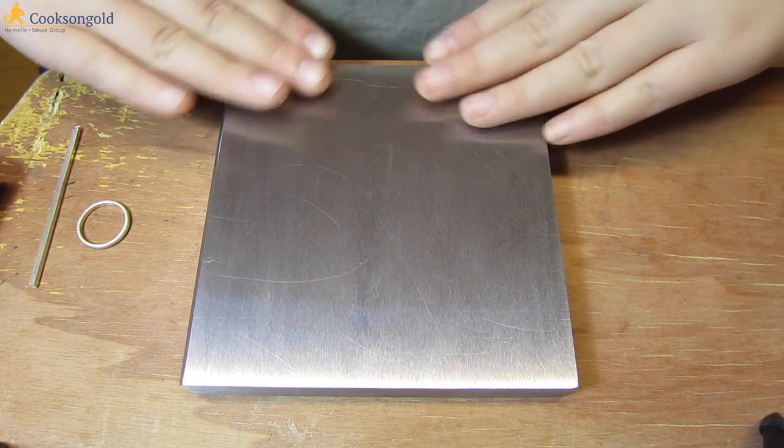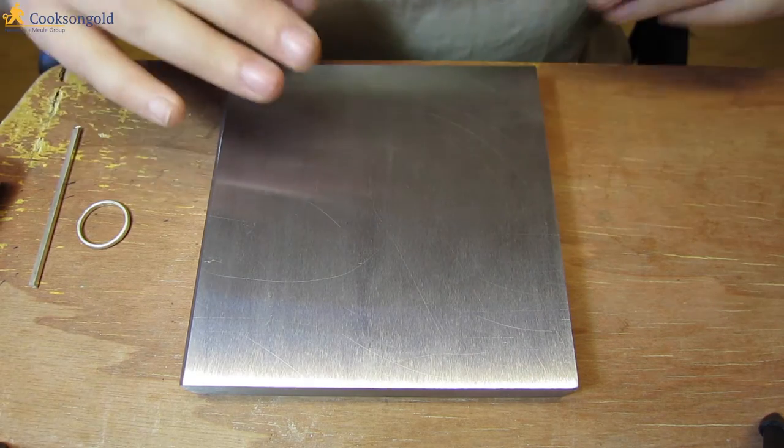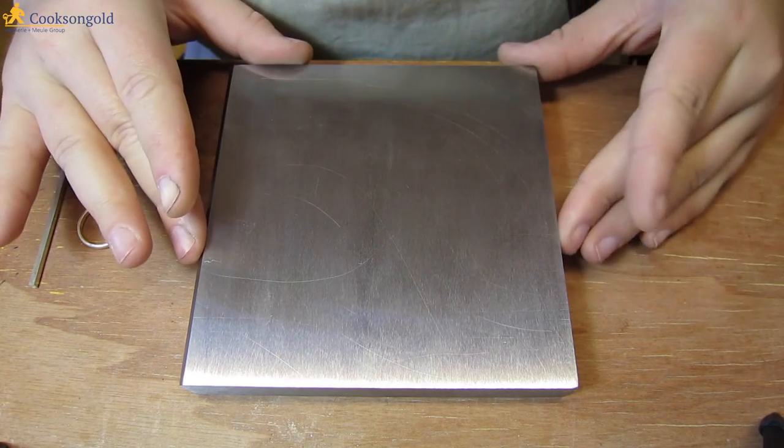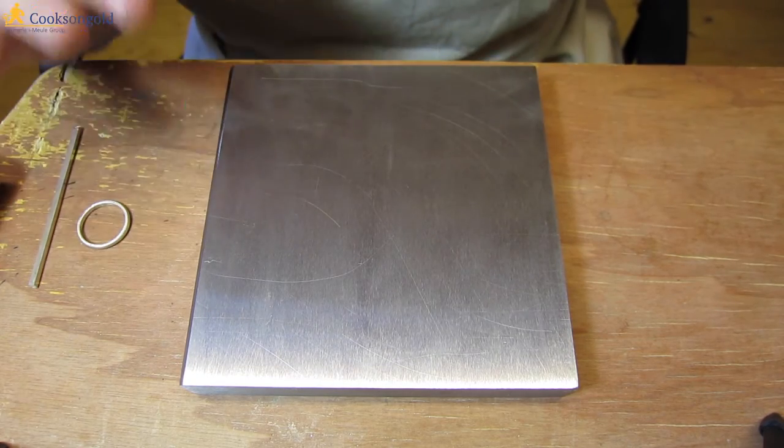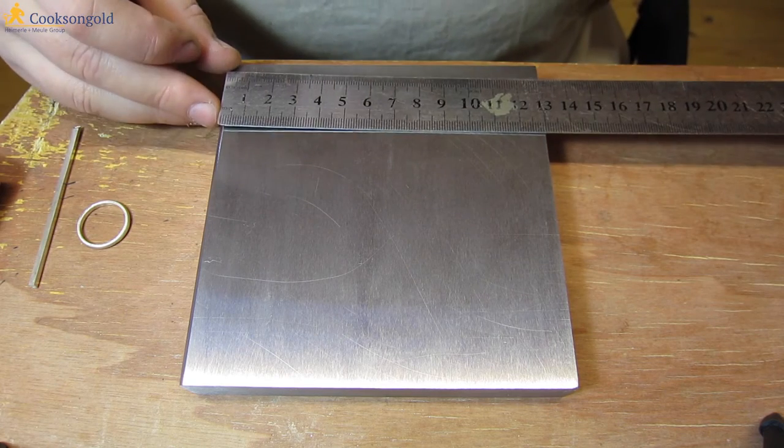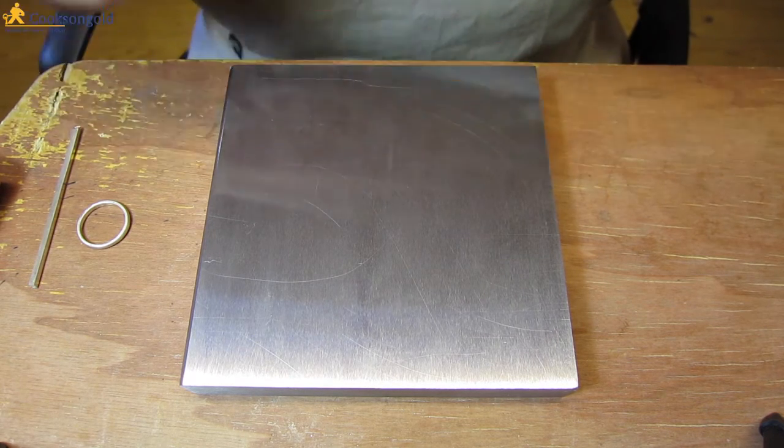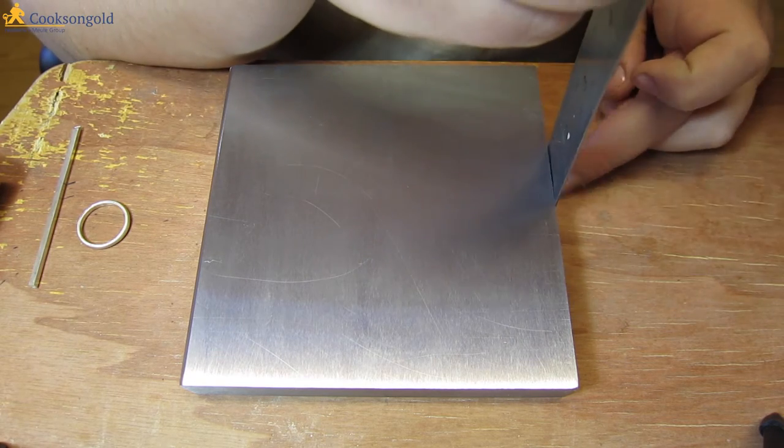Hi there, it's Zoe here and I'm doing another product review for Crooks and Gold. This product I'm reviewing is a Durston steel block and it measures approximately 13cm by 13cm and the depth of it is around 2cm.